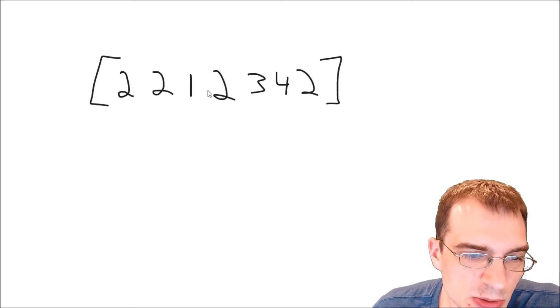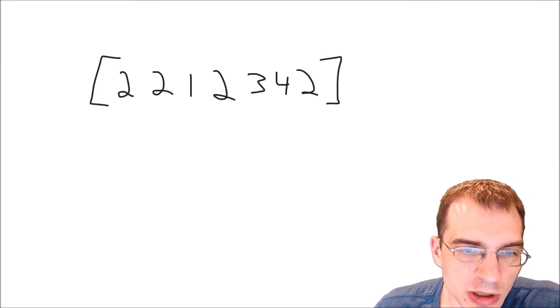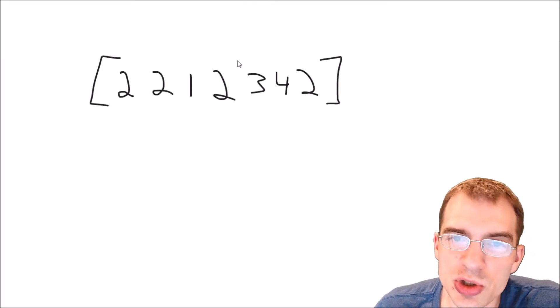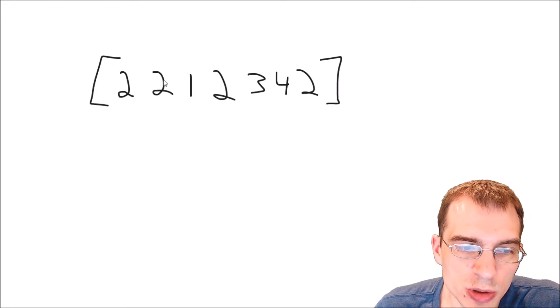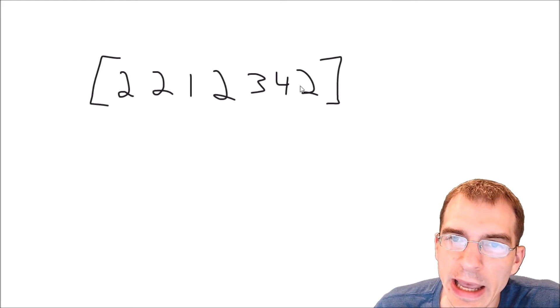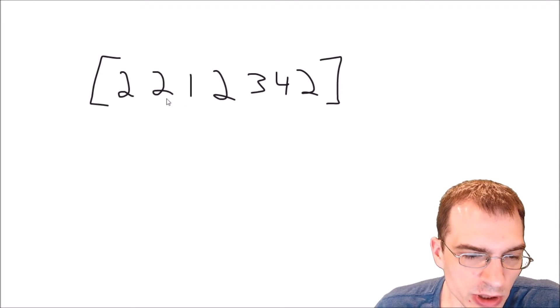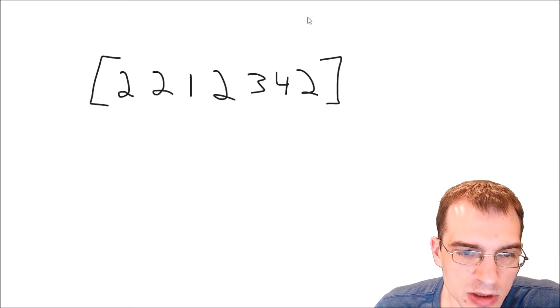So for this sequence I just kind of wrote down at random here the majority element would be 2, both because 2 appears the most times and because 2 occurs at least n divided by 2 times. In this case this is an array of length 7 so it occurs more than 7 divided by 2 or 3.5 times, it occurs 4 times.